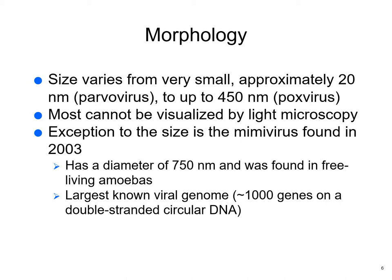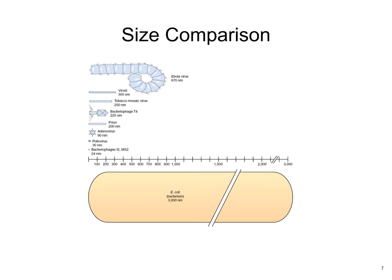Morphology — their shape. Viruses are very, very small. Parvovirus is tiny at 20 nanometers, and a pox virus can be up to 450 nanometers. The mimivirus is very unusual with a diameter of 750 nanometers; it's been found in free-living amoebas and is the largest viral virus known, with about a thousand genes, and it's a DNA virus.